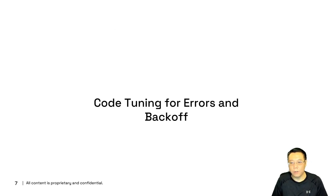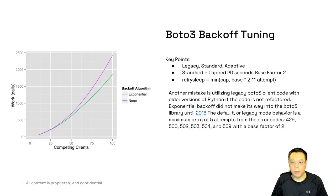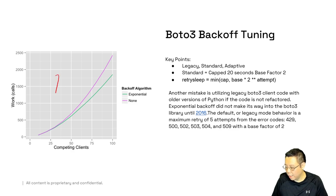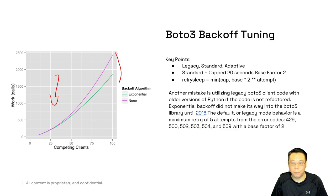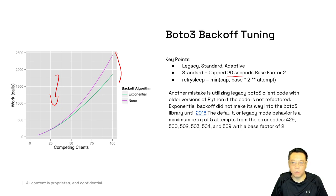Now let's look at how to do exponential backoff for errors and the strategies among them — what does the code look like when you actually use this? Boto3 includes its own backoff tuning strategies, which includes legacy, standard, and adaptive modes. The standard one is capped at 20 seconds maximum with a base factor of two. As your clients scale, the exponential backoff scales with you, providing a better benefit. However, it is capped at 20 seconds. This also does not include a concept called Jitter.